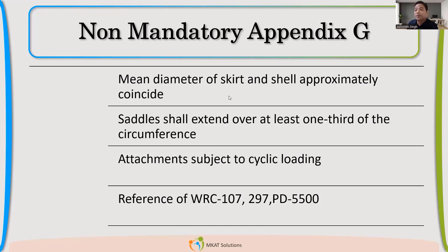Now let us focus on the appendix. First point: the mean diameter of the skirt should match with the mean diameter of the shell. For saddles, we always follow that the saddle should have a minimum 120-degree support. The saddle should extend up to one third of the circumference of the vessel — that is, 360 divided by 3, which equals 120 degrees. This is where the 120-degree saddle support rule comes from.